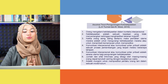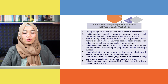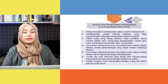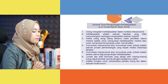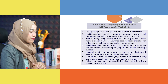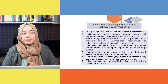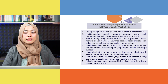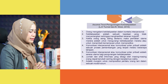Terdapat tujuh asumsi teori pengurangan ketidakpastian. Yang pertama adalah orang mengalami ketidakpastian dalam konteks interpersonal. Ketidakpastian adalah sebuah keadaan yang tidak menyenangkan sehingga menghasilkan tekanan kognitif. Ketika orang asing saling bertemu, maka perhatian utama mereka adalah untuk mengurangi ketidakpastian mereka atau untuk menambah kemampuan untuk memprediksi.